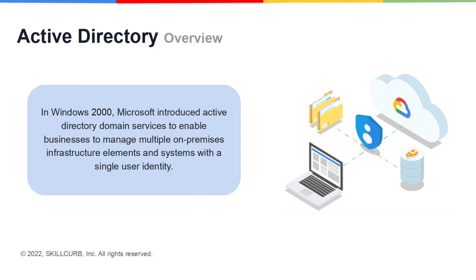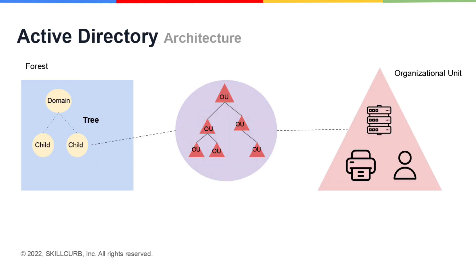In Windows 2000, Microsoft introduced Active Directory domain services to enable businesses to manage multiple on-premises infrastructure elements and systems with a single user identity. Here's an architectural diagram. You have your enterprise, which is the forest, and these are made up of domains. A domain is a means to host these different directory services and also the means by which people authorize to your directory.